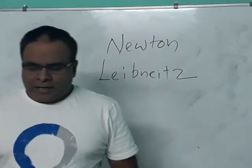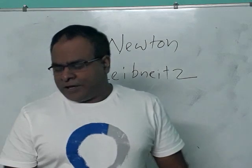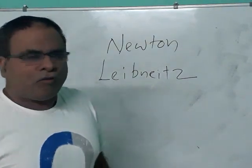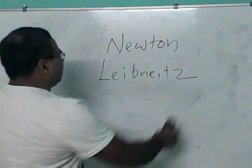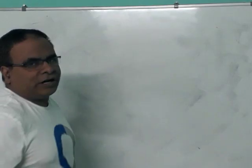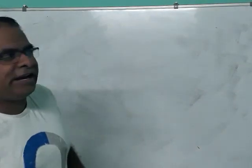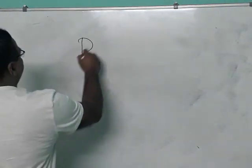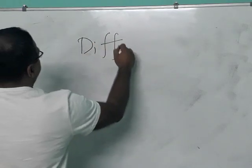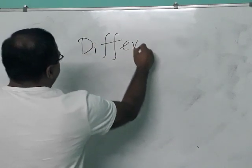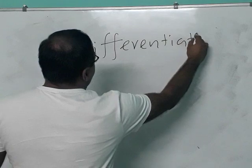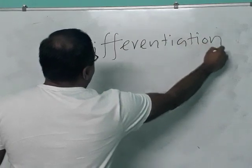In calculus, there are two sections. One is differentiation. The second part, we call it as integration. Differentiation and integration — these are the two sections in calculus.